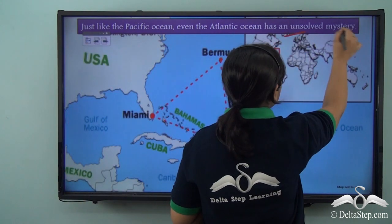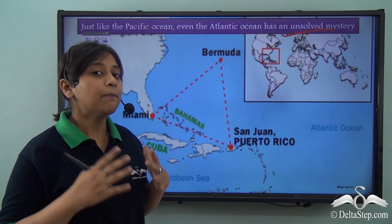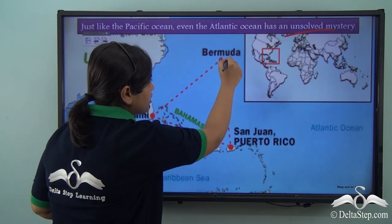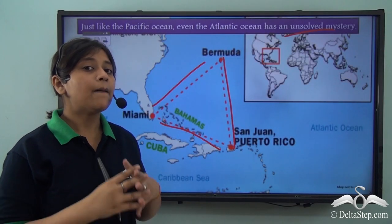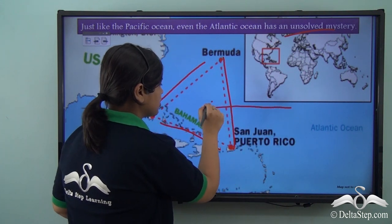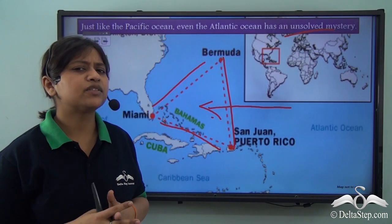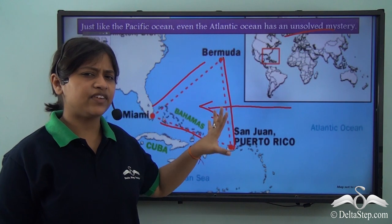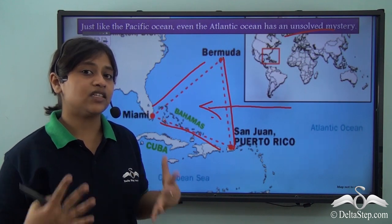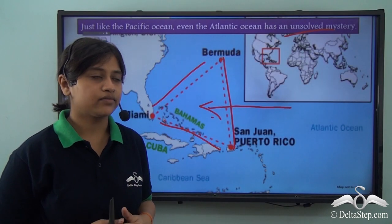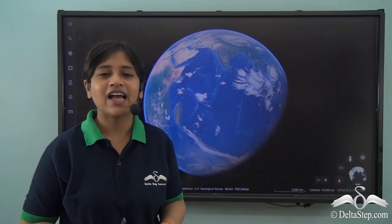Just like the Pacific Ocean, the Atlantic Ocean has an unsolved mystery — the mystery of the Bermuda Triangle, as you can see here. It is believed that when planes cross over this region, they tend to vanish. Some researchers believe there is a magnetic field that attracts the planes. But this mystery is still unsolved and research is still going on.